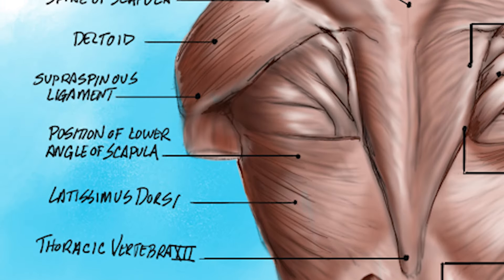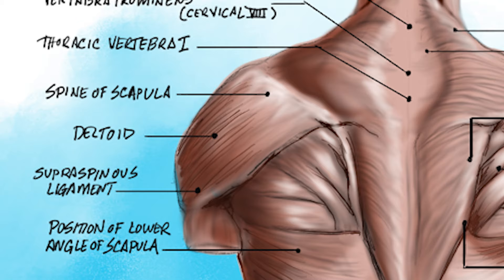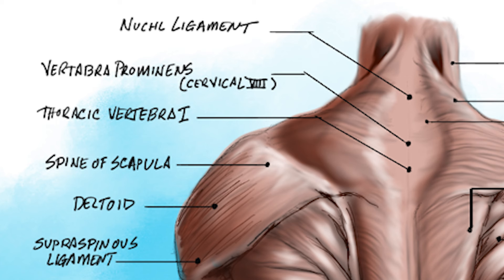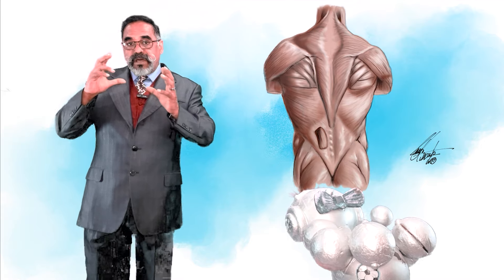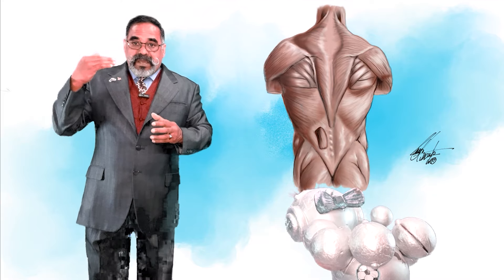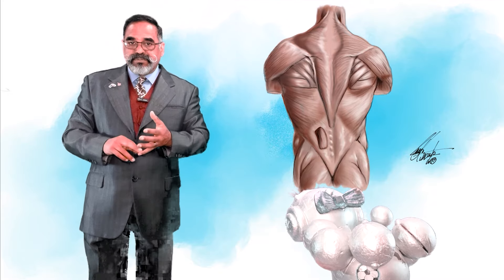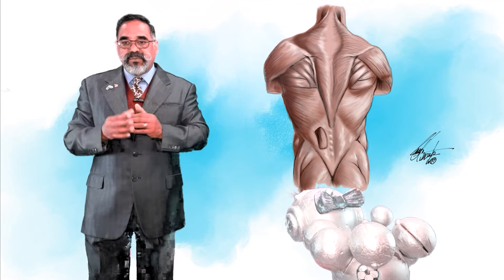From there we move into the thoracic vertebra — the seventh vertebra — the latissimus dorsi, position of the lower angle of the scapula, supraspinous ligament, deltoid, spine of the scapula, and thoracic vertebra. Where we start getting into the area of vehicle accidents and motorcycle accidents where they break that part of the neck — breaking the lower upper area means instant death because it shuts everything down. Quadriplegics and paraplegics usually break in that area, and then the lower part of the body no longer works.